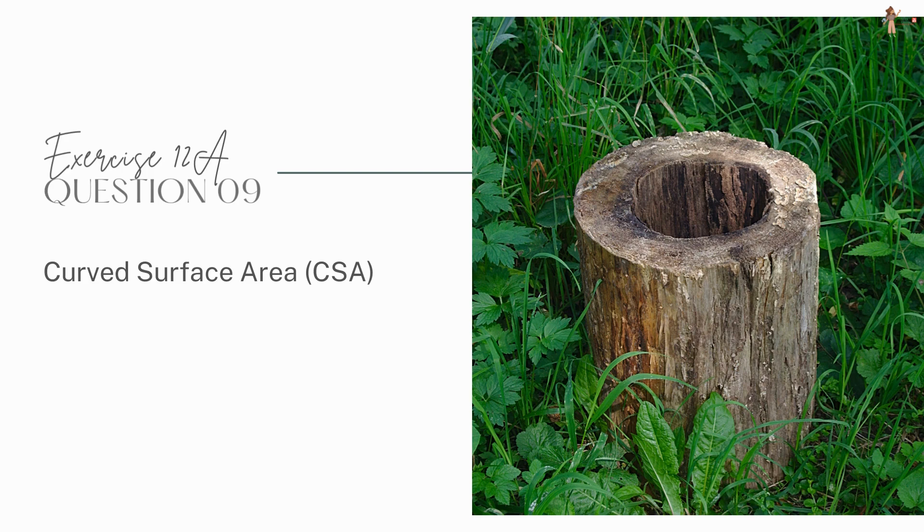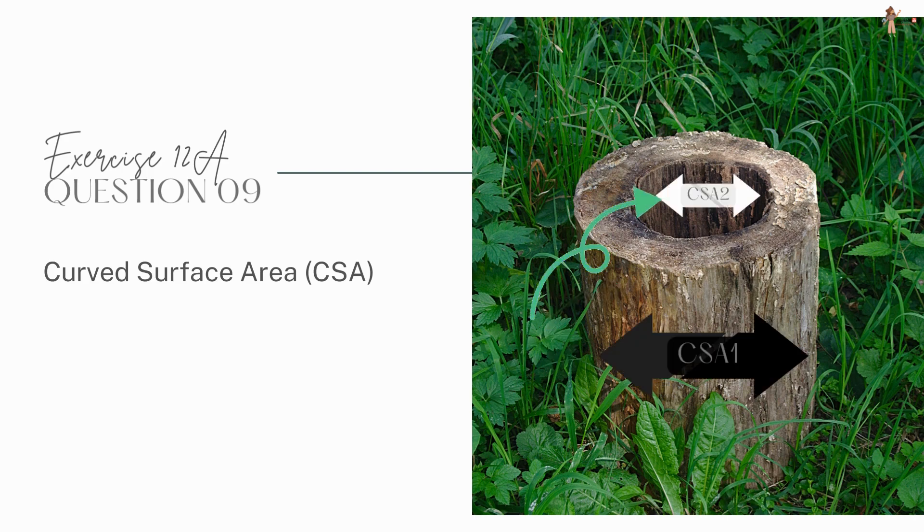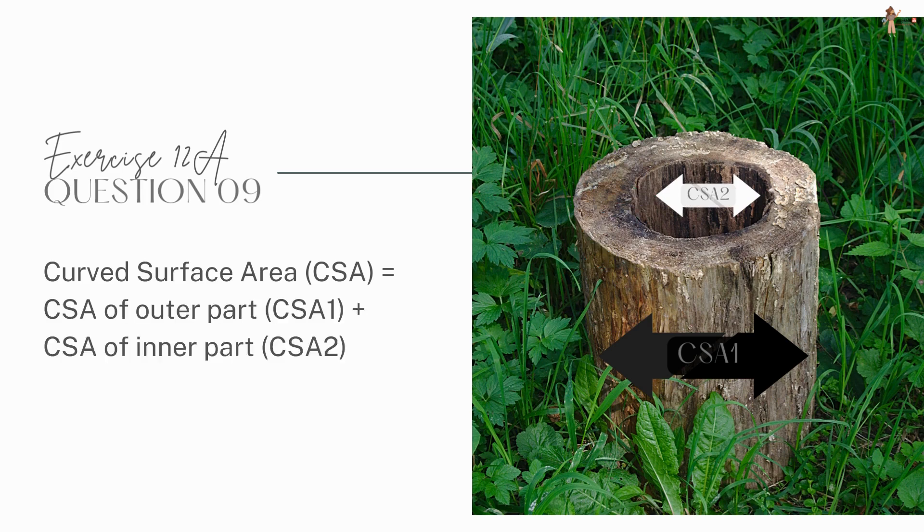Now let's find the curved surface area of the cylinder first. There are two curved surfaces, right? One on the outer part of the cylinder and one on the inner cylinder. Hence, the total curved surface area would be the sum of the two.